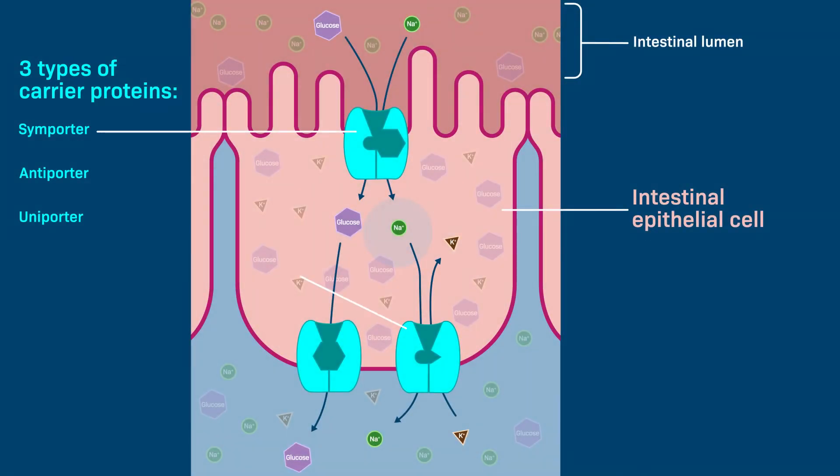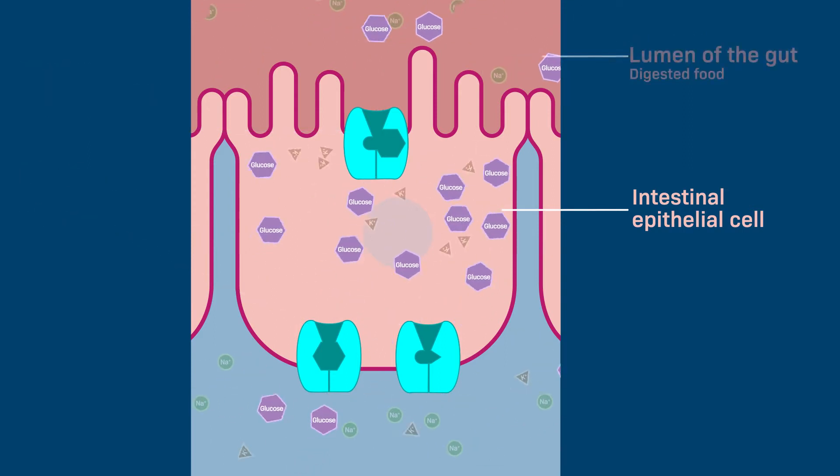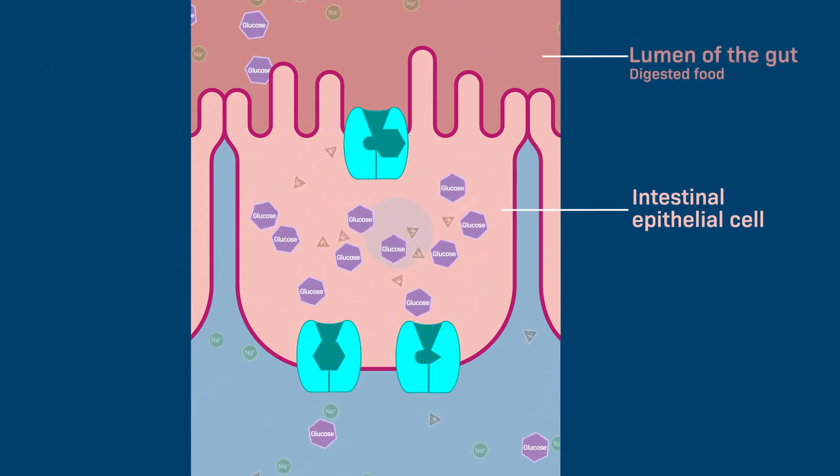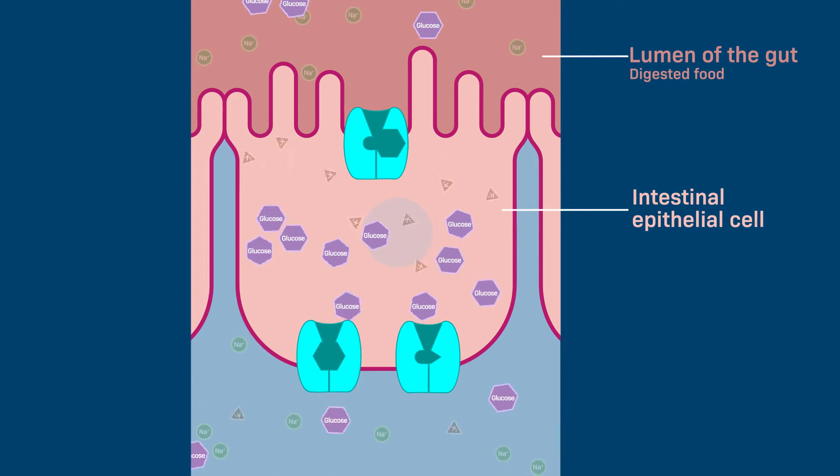Let's look at an example of how a cell uses these three types of carrier proteins. When we eat food, it gets broken down in our stomach and then absorbed in the small intestine.